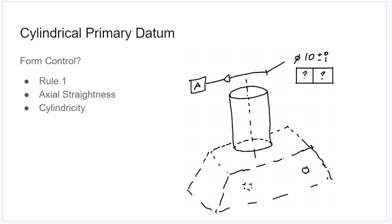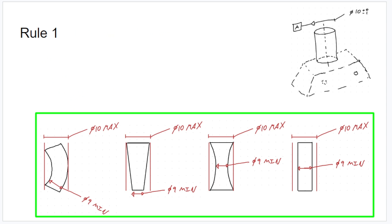So to understand which ones are best suited for your application, I think we should look at the extreme form issues that can occur, or extreme versions of the form issues that can occur with each type of control. So rule number one, as I said, very forgiving. As long as the part fits within the perfect form at MMC boundary, and every actual local size is within the specified tolerance, that part is good to go.